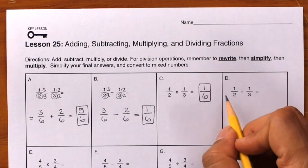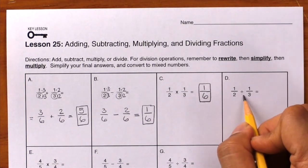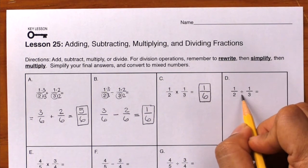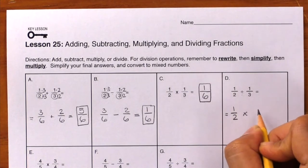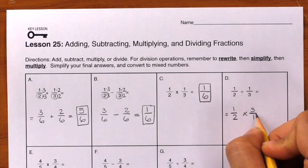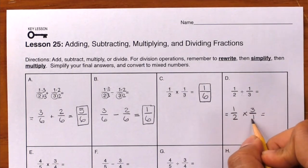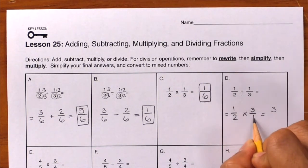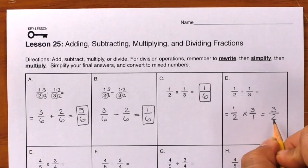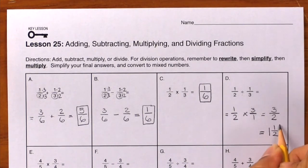Finally, letter D. Instead of 1 half times 1 third, we have 1 half divided by 1 third. Remember, we're not going to divide fractions — we're going to rewrite this and multiply by the reciprocal. So I'll write down 1 half times 3 over 1, which is the reciprocal of 1 third. Let's see if we can simplify anything — there's nothing to simplify. So let's multiply across: 1 times 3 is 3, 2 times 1 is 2. We just need to convert this to a mixed number, and just like we learned in lesson 15, the answer is 1 and 1 half. Box your answer.